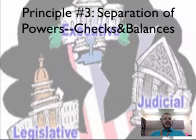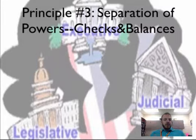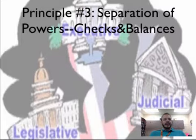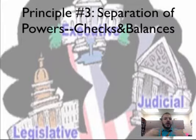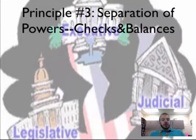Principle number three is the idea of separation of powers. We take the legislative powers and give those to Congress, the job of carrying out the laws to the executive branch, and the job of ruling on the laws to the judicial branch. When we divide power between different branches of government, that's separation of powers. We then allow each branch of government a little bit of oversight — a little bit of say in the other branches' process. For example, Congress has oversight over the judicial branch by getting to approve judges. That's checks and balances.